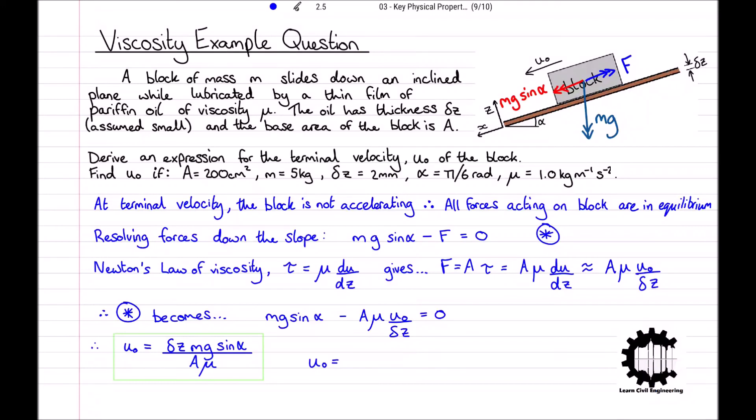With A equals 0.02 meters squared, m equals 5 kilograms, delta z equals 0.002 meters, alpha equals pi over 6 radians, and mu equals 1.0 kilograms per meter per second, we get that the terminal velocity u0 is equal to 2.5 meters per second.